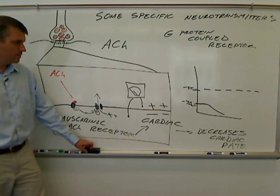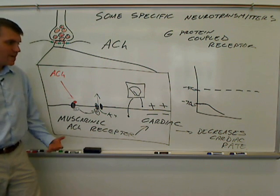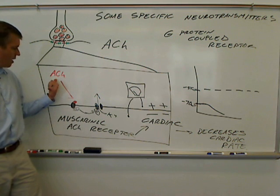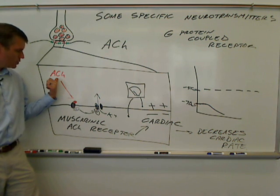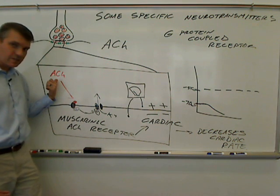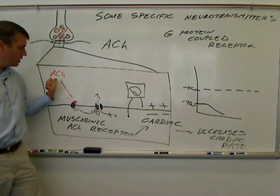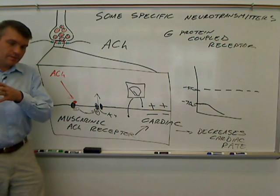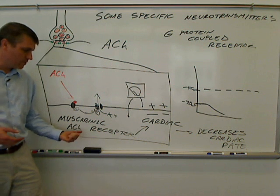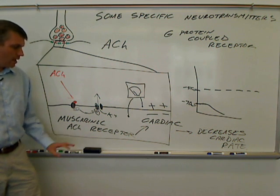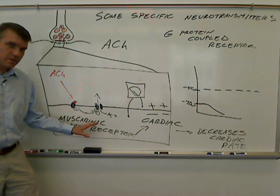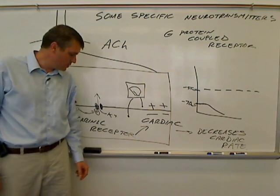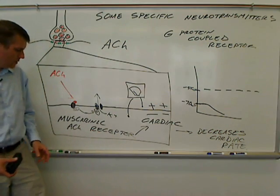That's the major picture for different types of receptors and how one neurotransmitter can have different effects in different parts of the body because of different receptors — the nicotinic receptor versus a muscarinic receptor. Not all muscarinic receptors, by the way, are inhibitory or lead to inhibitory postsynaptic potentials, but the example I used here did.